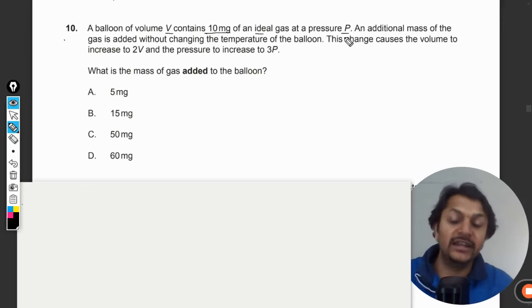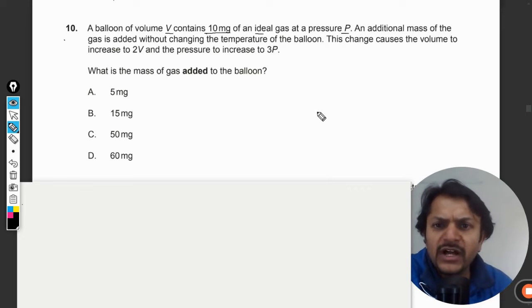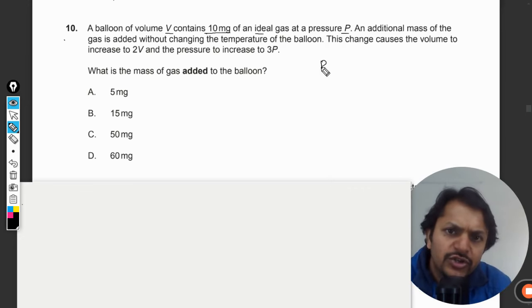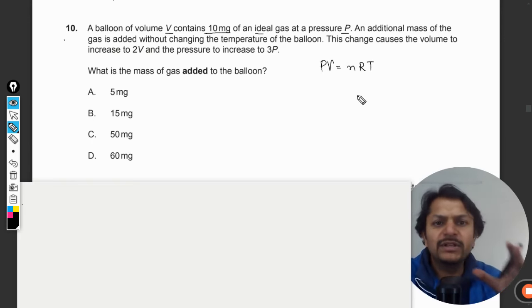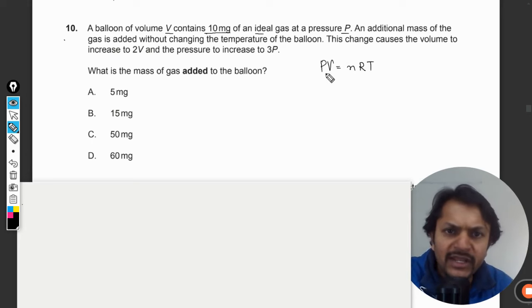What is the mass of the gas which is added into the balloon? Okay, dear students, so this is a simple ideal gas equation will be used here. So PV is equal to nRT, all the symbols having their usual meaning: pressure, volume.